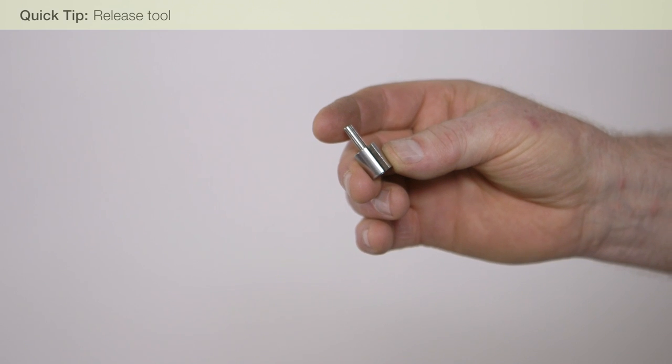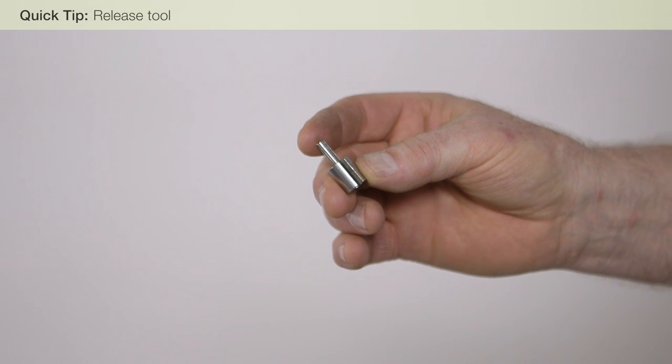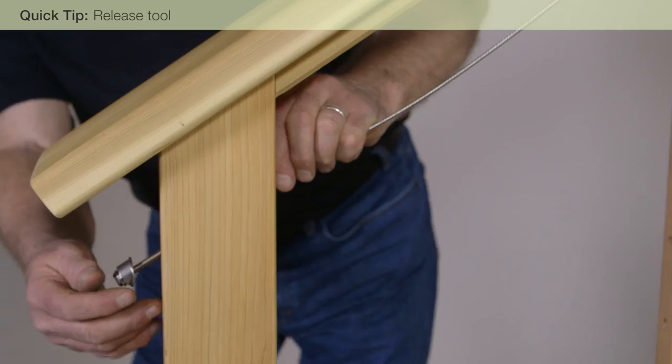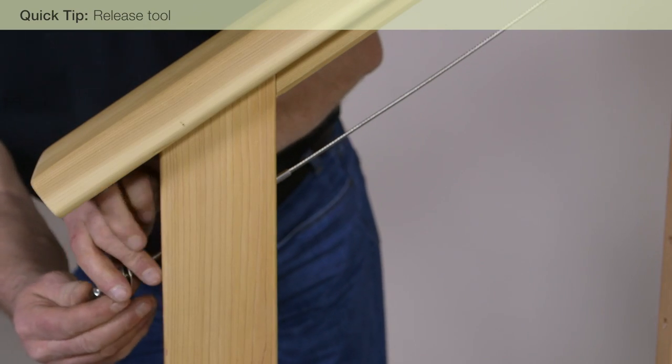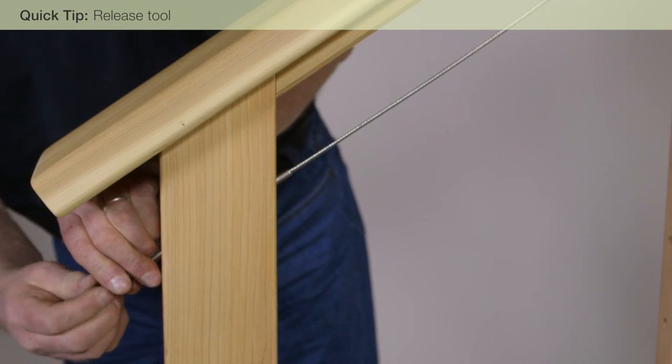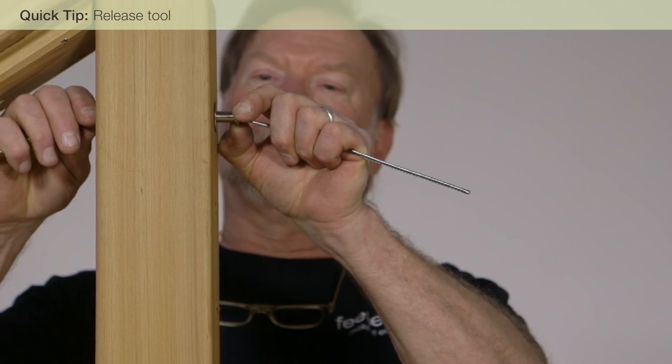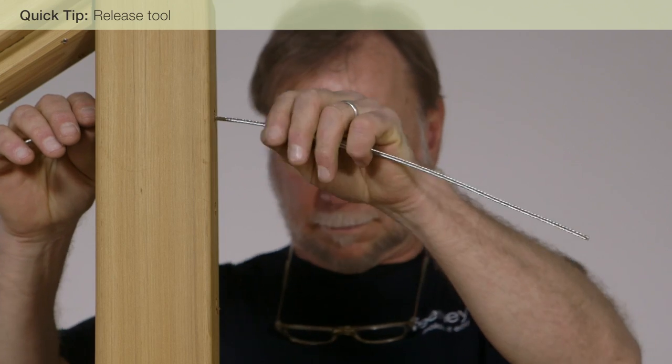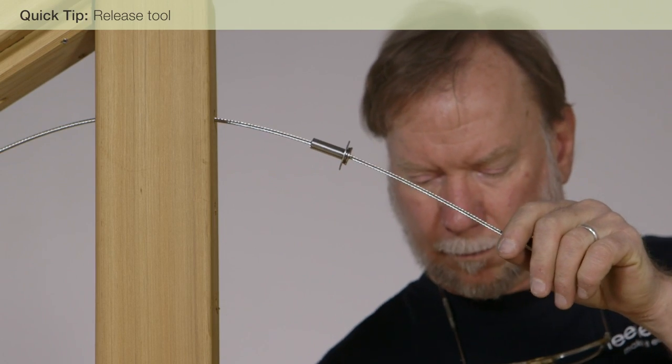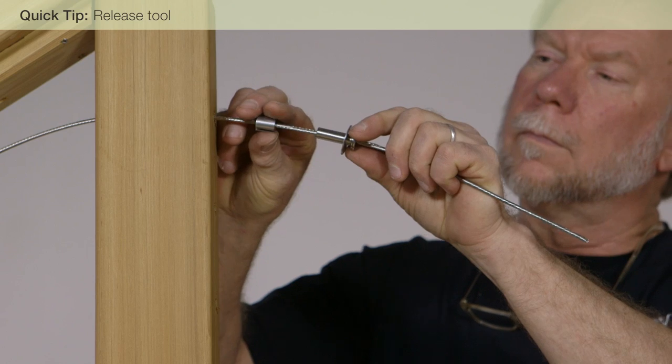If you make a mistake, don't panic. You can use the quick connect release tool. First, loosen the cable by removing the washer nut on the threaded terminal fitting. Then, at the quick connect post, use the release tool to disengage and remove or readjust the position of the quick connect fitting.